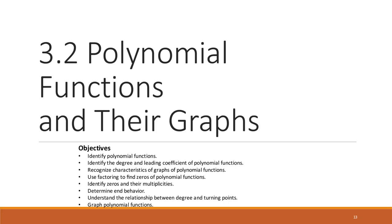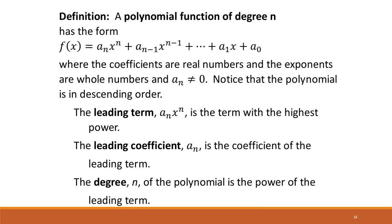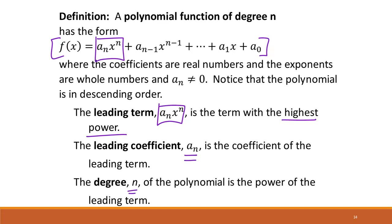Today we are working on section 3.2, which is polynomial functions and their graphs. We looked at quadratic functions earlier; now we're going to look at polynomials in general. The standard form of a polynomial function to any degree n is given by this formula. Your leading term is whatever term has the highest power of n, with leading coefficient labeled as aₙ and degree n.